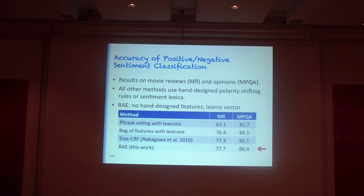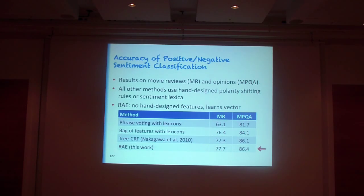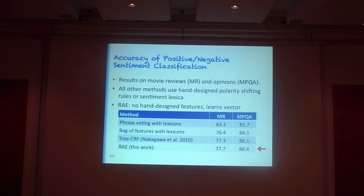We can also visualize this. A great question: does it matter when we combine words in the tree? Essentially, we're building tree structures without providing the right parse. The model builds a tree structure where it tries to capture as much sentiment as possible — it first merges sentiment words and then adds content words on top. Words that are merged last do matter more.